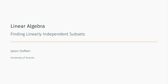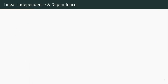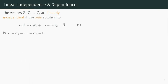In this video, we will discuss linear independence and dependence, and how to find a linearly independent subset of a set of vectors. We say the vectors v1 through vn are linearly independent if the only way to obtain 0 as a linear combination is if all of the coefficients are 0.